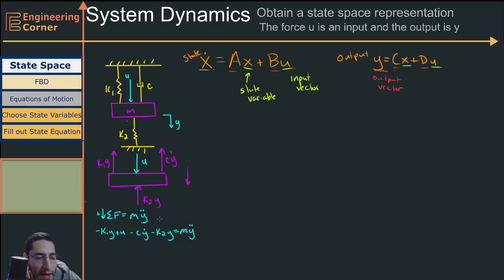Now I'm going to rearrange this equation. So we get my double dot plus cy dot. I'm going to combine the k1 and k2 and take out the y and move it over to the other side. So we're going to have plus k1 plus k2 times y equals u. And now we have our equation of motion.